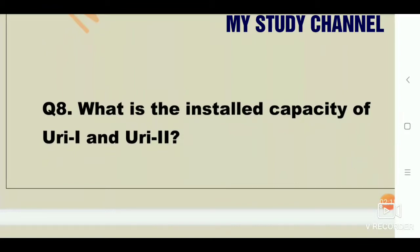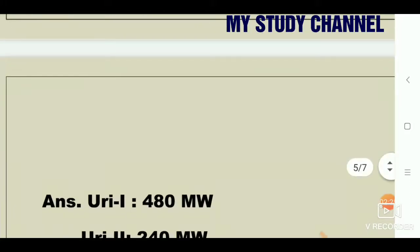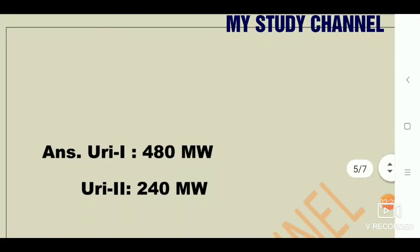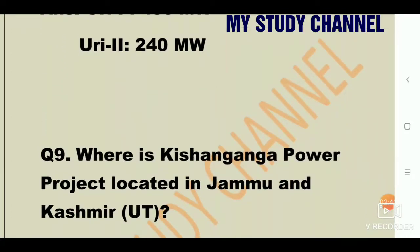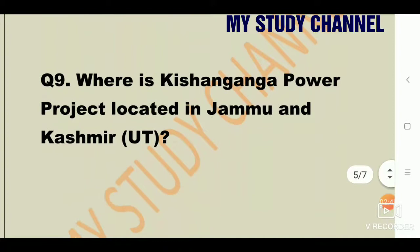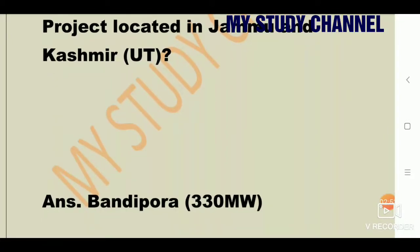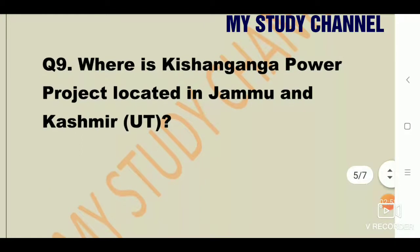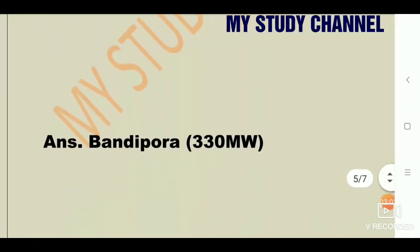Next question — most important: What is the installed capacity of URI-1 and URI-2? The installed capacity of URI-1 is 480 megawatt and URI-2 is 240 megawatt. Next question: Where is Kishan Ganga Power Project located in Jammu and Kashmir Union Territory? The answer is Bandipora, with a capacity of 330 megawatt.